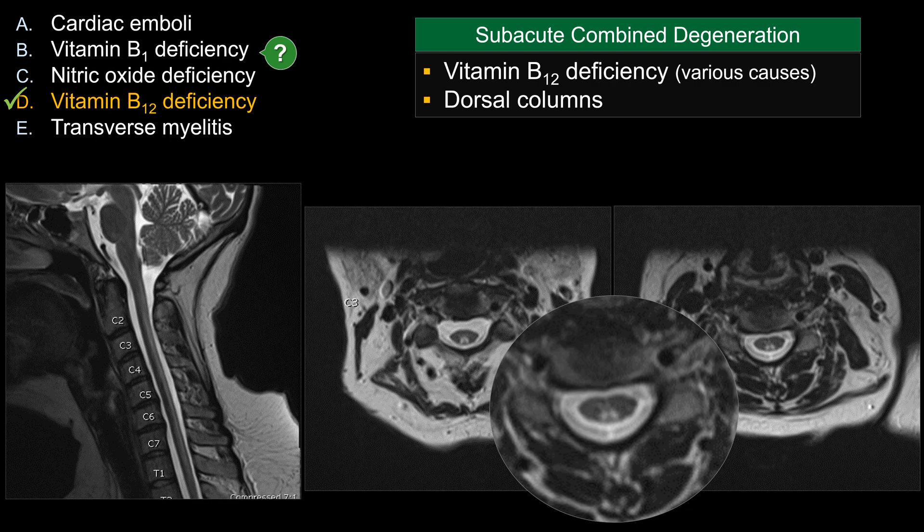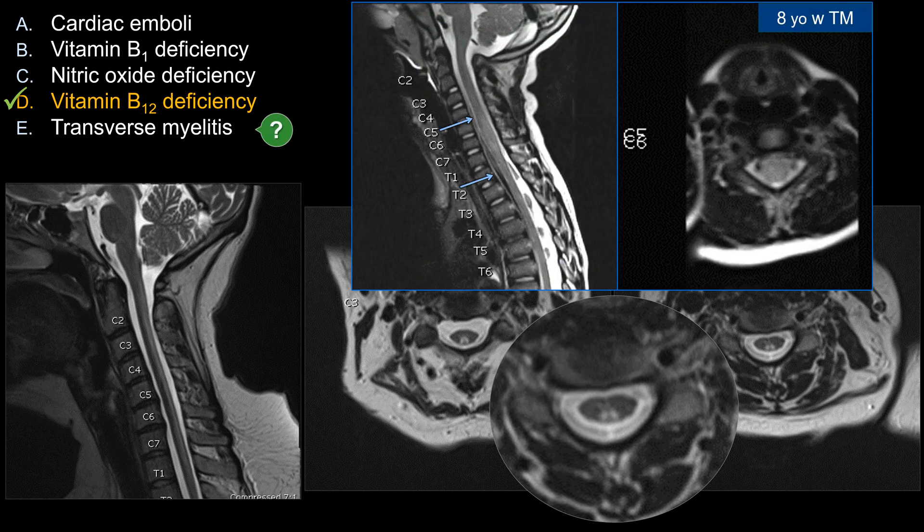We already discussed why choice C is not the best answer. For choice E, transverse myelitis can present as a long-segment involvement. However, the classic appearance of transverse myelitis is involvement of essentially the entire cord with cord expansion. It would be very unusual for transverse myelitis to show selective involvement of only the dorsal column. So choice E does not make sense here.